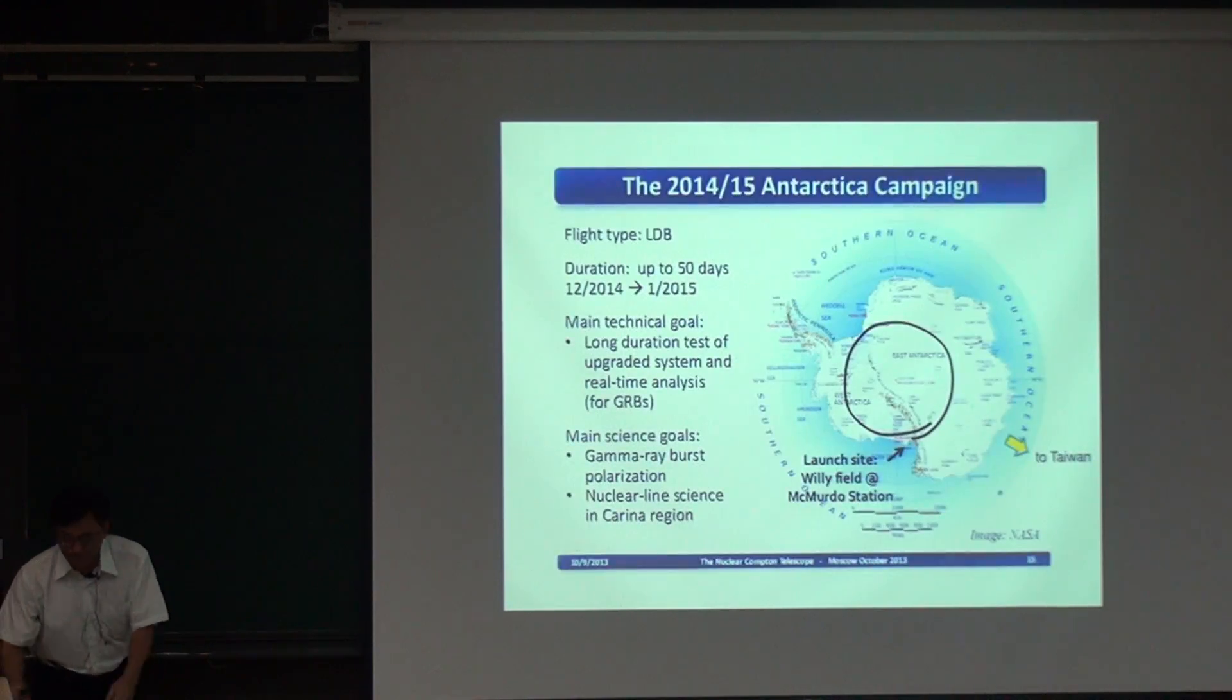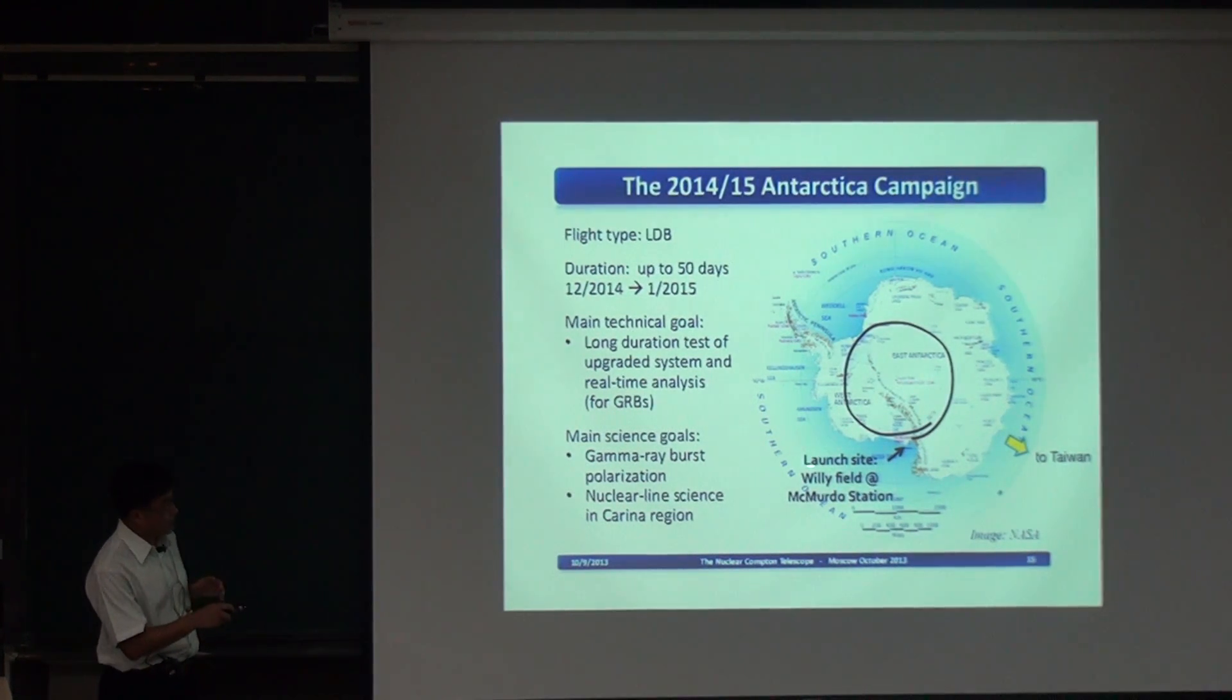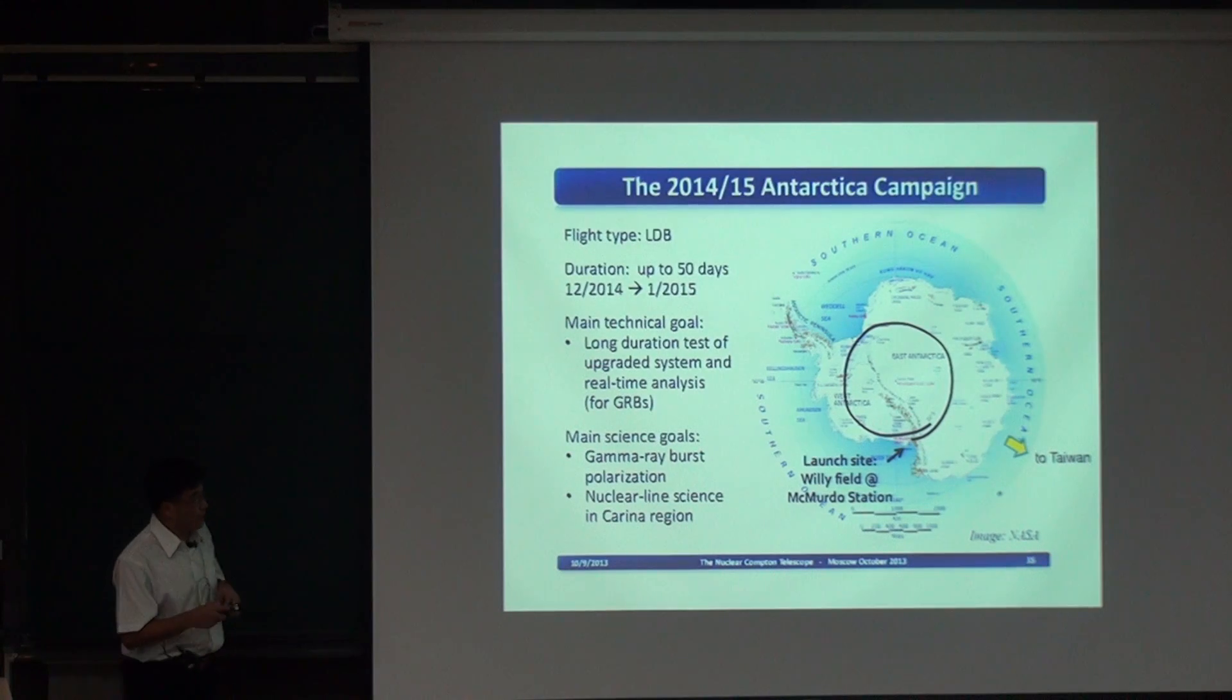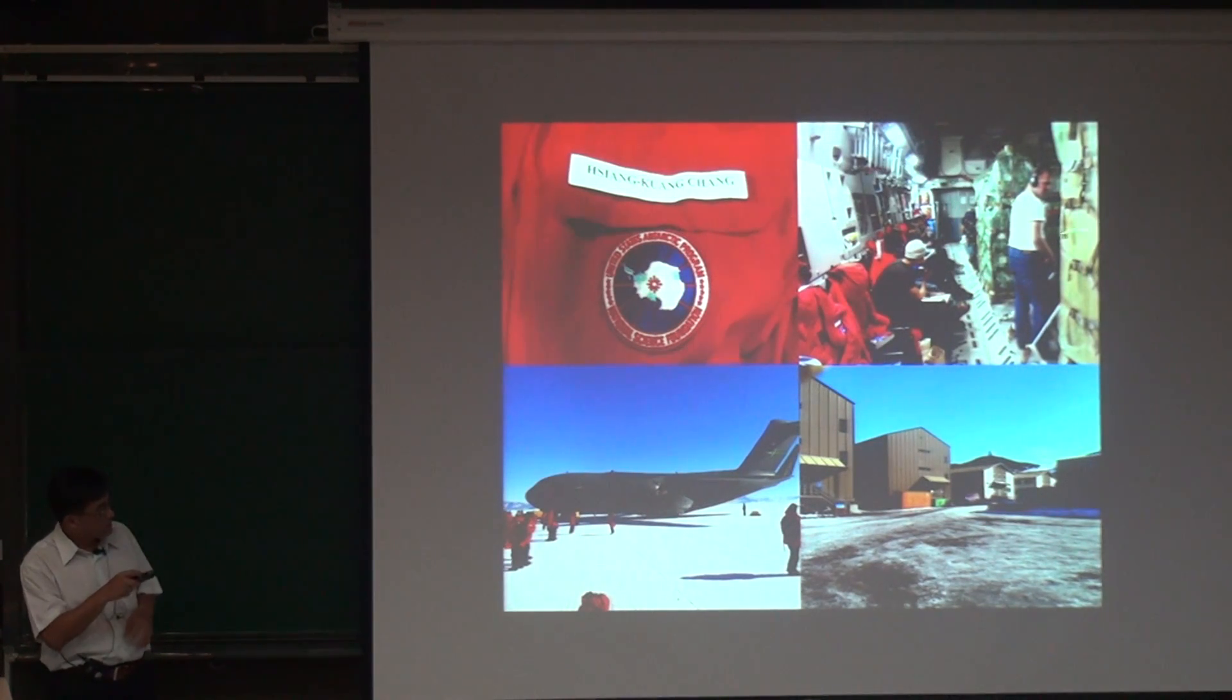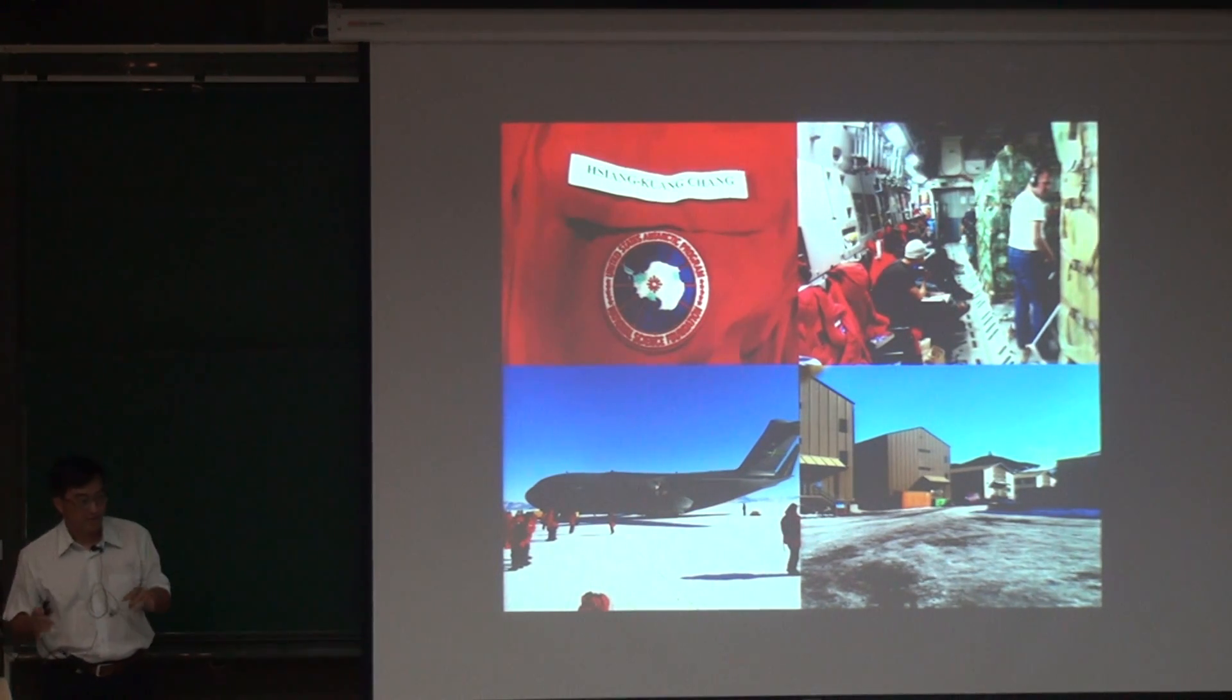So now for Antarctica flight. This is a flight in 2014. So our plan, our plan was to launch the balloon from McMurdo. And then we hope it can turn around and maybe turn the second round to have 50 days, 60 days flight. That was our hope. And so some pictures. I also went there. You see this is my name. And then this is the airplane that I took to McMurdo Station. We launched the flight near McMurdo Station. We didn't go to the South Pole. Maybe Pierre went to the South Pole, right?